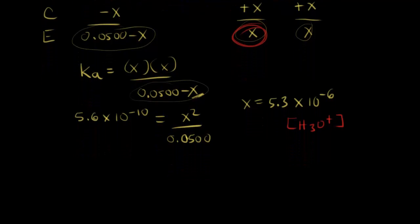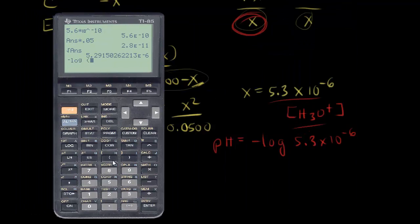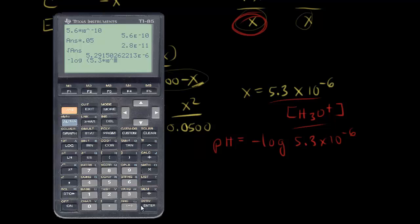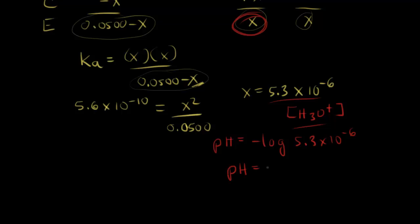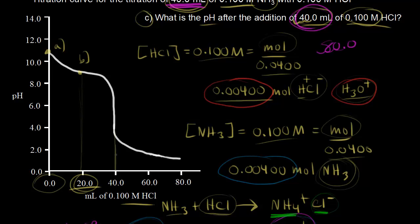Now we can find the pH. pH = −log[H₃O⁺] = −log(5.3 × 10⁻⁶) = 5.28. So our pH is equal to 5.28. At the equivalence point, our solution is acidic with a pH of 5.28. On the titration curve, after adding 40 milliliters of acid, we find this point at pH 5.28. This is part C of our question.